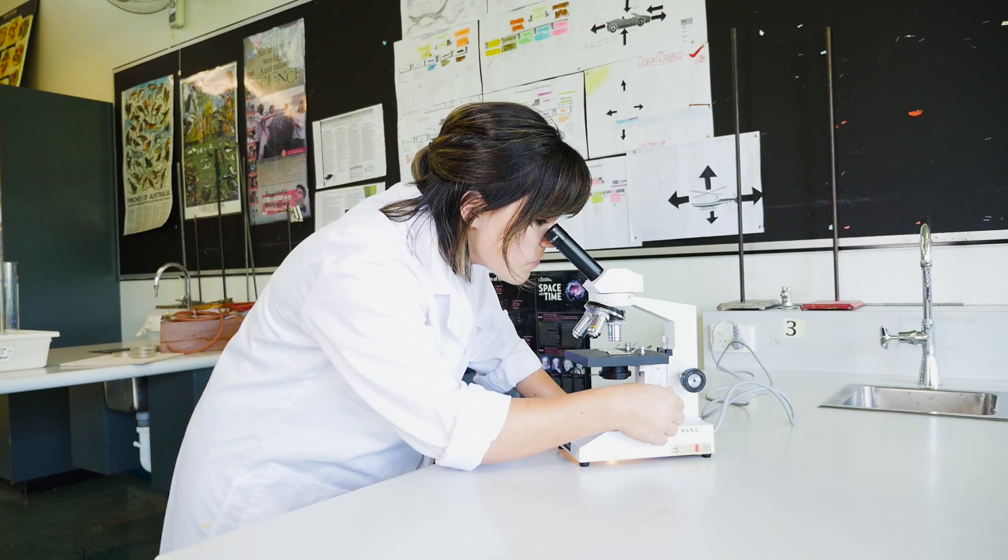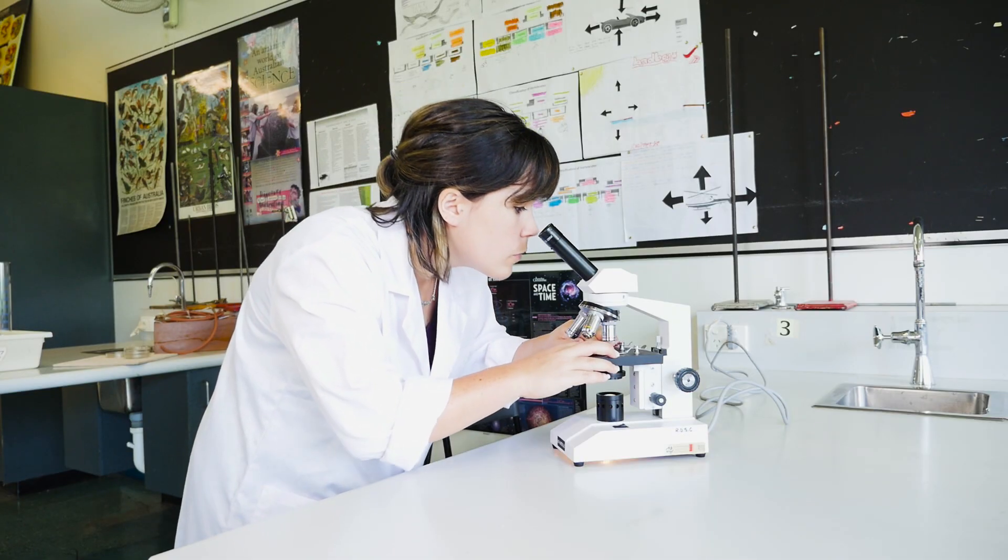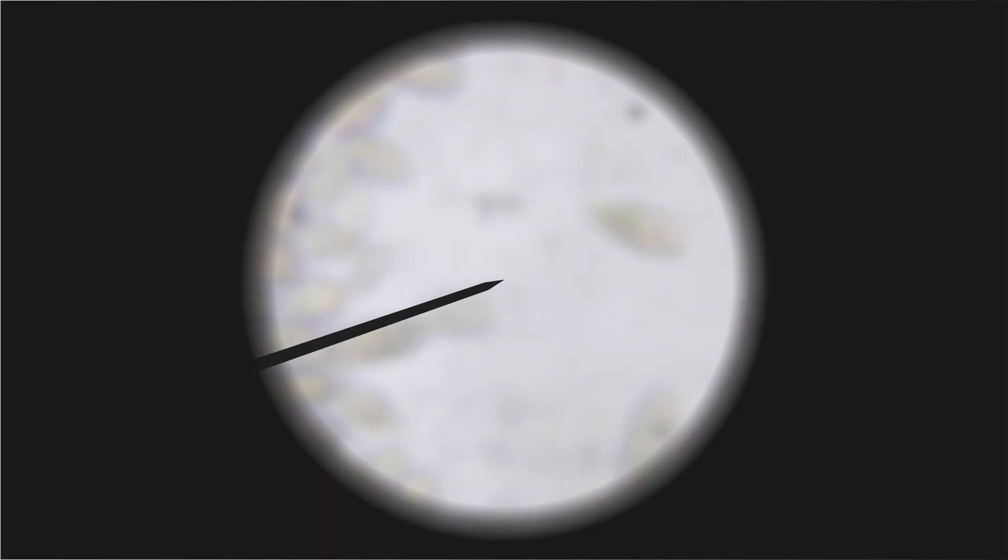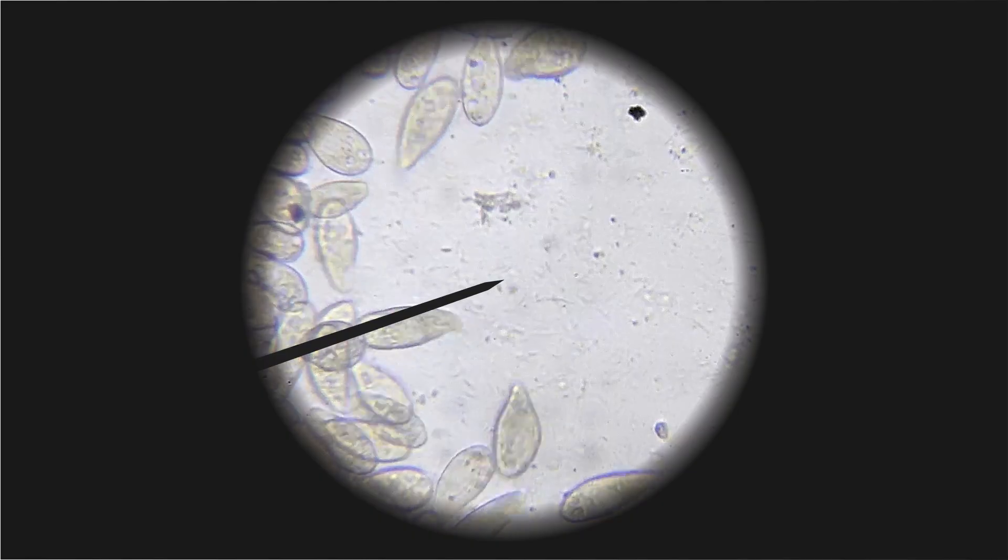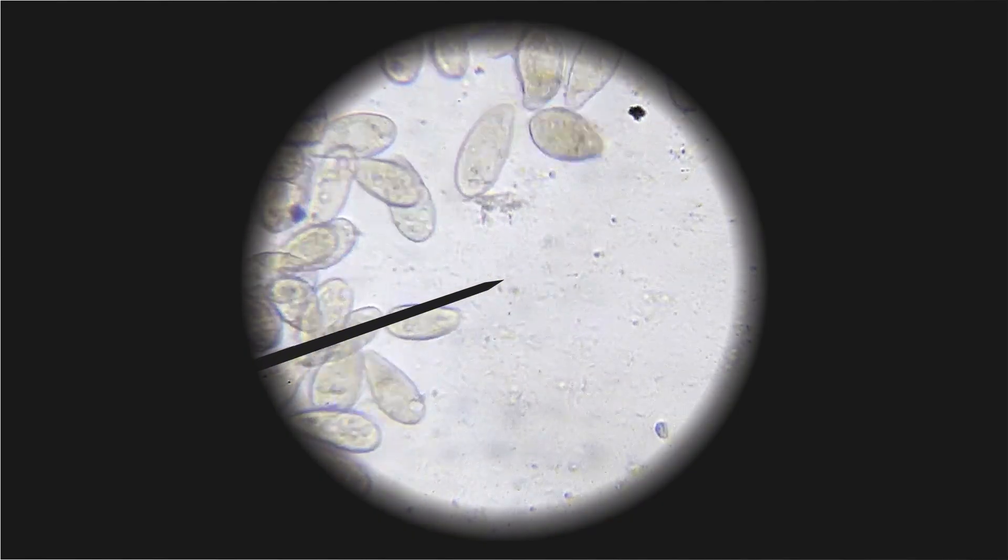Before zooming into the next objective lens, make sure that the specimen is exactly in the center of the field of view. Many microscopes have a small needle you can see which shows you exactly where to move a specimen so it's in the center. This will help you to zoom in on the part you want to see.